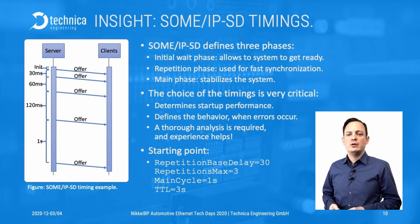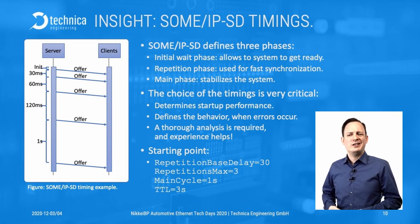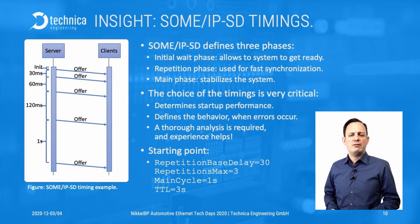We want to give you a starting point for timing configuration based on standards and example implementations we know are pretty good. Set the repetition base delay to 30 milliseconds, repetitions max to 3, main cycle to 1 second, and TTL to 3 seconds. This produces about four messages before going into the main phase, giving you a very fast startup even in error situations, followed by a very stabilized system. This is a good starting point when doing your tuning.